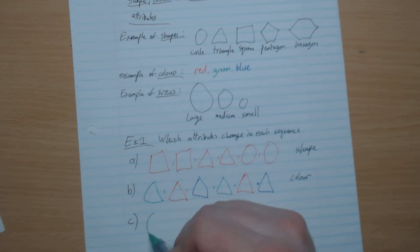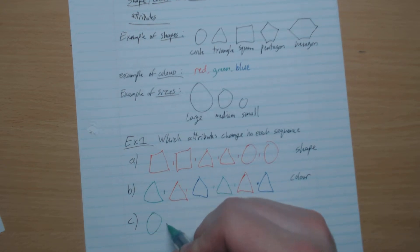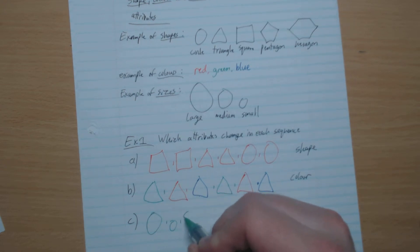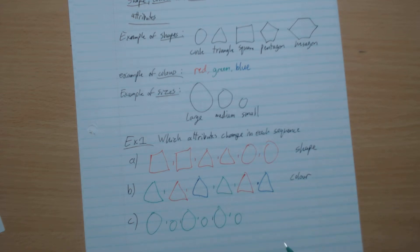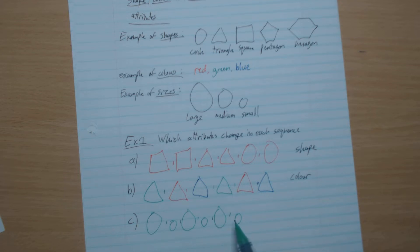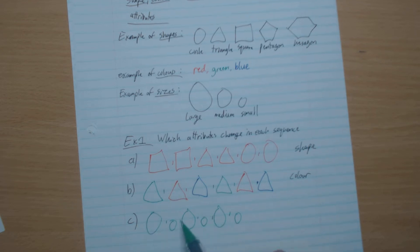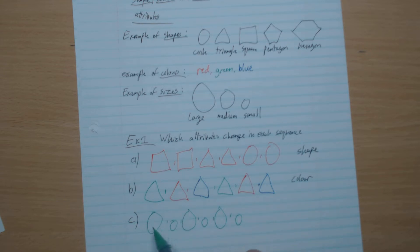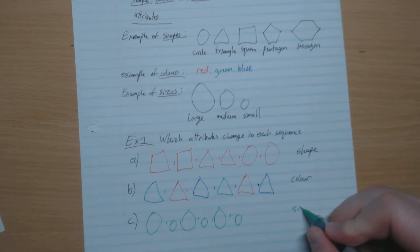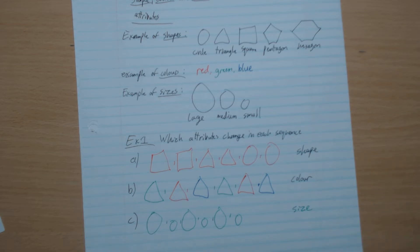What do we notice for this next sequence? They're all the same shape — they're all circles. And they're all the same color. But they change size: medium, small, medium, small. So here we've got the size that is changing.